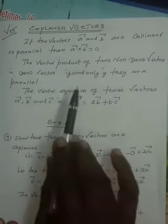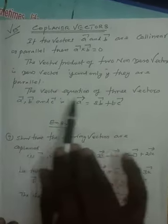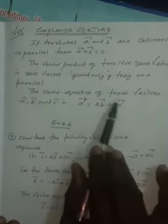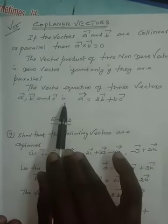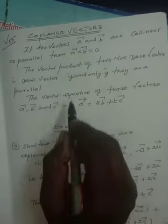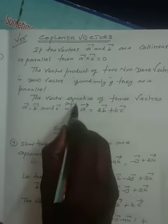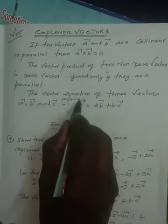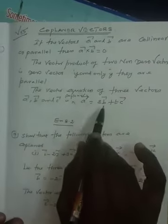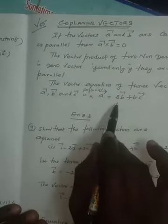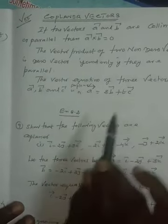If two vectors are parallel to each other, then non-zero vectors are taken. The vector equation of three vectors A, B, and C being coplanar is: A vector is equal to s of B vector plus t of C vector.